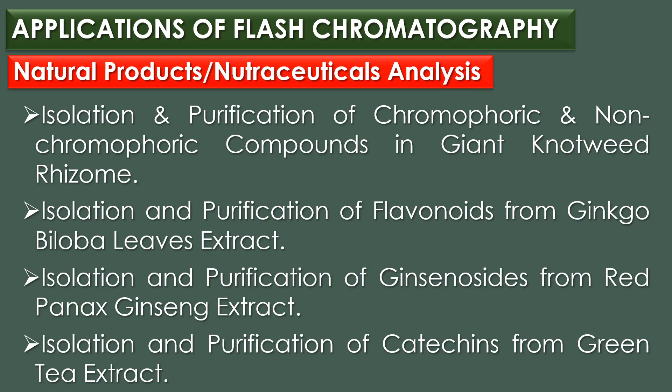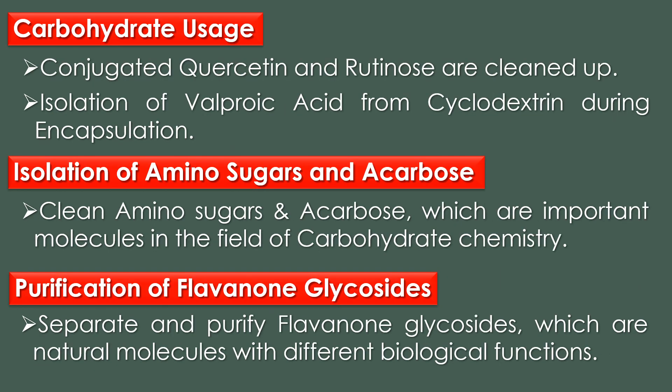Applications of flash column chromatography: In natural products and nutraceutical analysis, it is used for isolation and purification of chromophoric and non-chromophoric compounds in giant knotweed rhizome, isolation of flavonoids from Ginkgo biloba leaf extract, isolation of ginsenosides from red ginseng extract, and isolation of catechins from green tea extract. In carbohydrate usage, conjugated quercetin and rutinoside are purified with flash chromatography, and it is used for isolation of valproic acid from cyclodextrin during encapsulation, as well as isolation of aminosugars and acarbose.